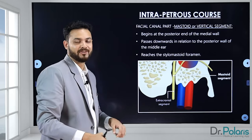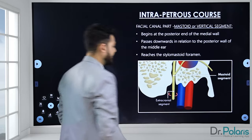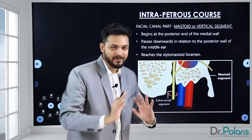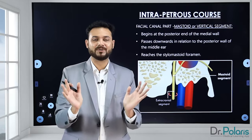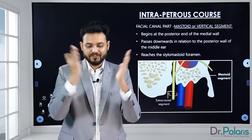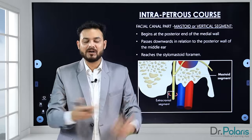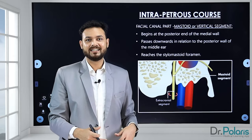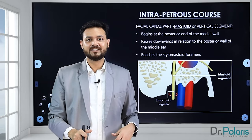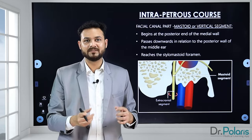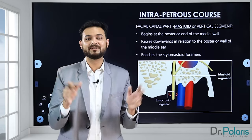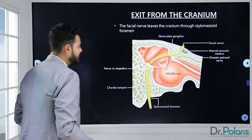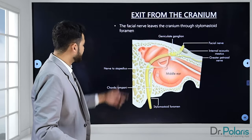The nerve exits through the stylomastoid foramen, forming the extracranial segment. This is all about the facial canal and its segments. If you understand each part, you can predict what symptoms will occur when the nerve is involved. If particular fibers are involved, the person may not eat properly or may have distorted taste sensations. This is why anatomy is so important in ENT.